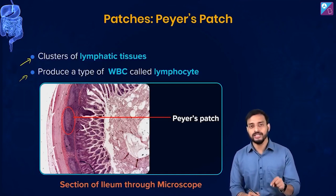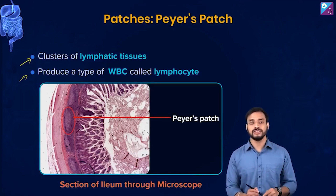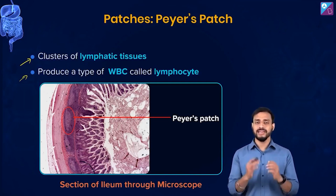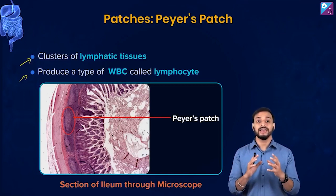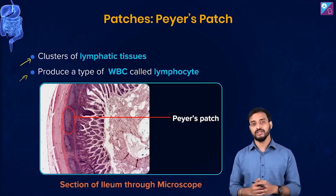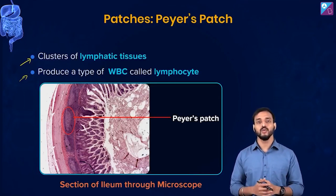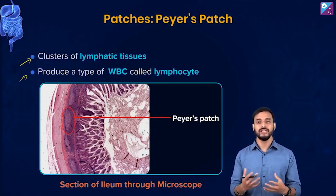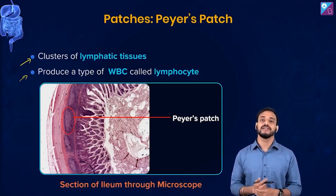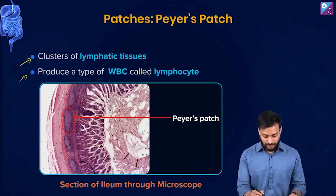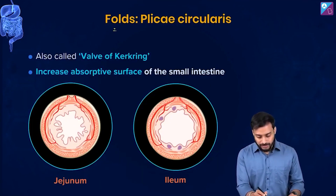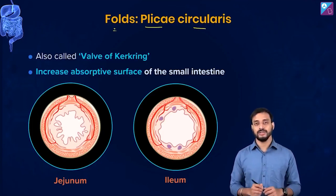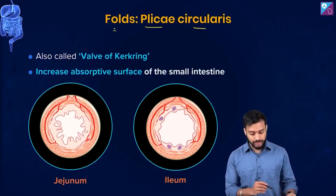Peyer's patches monitor the bacterial populations in the intestine. If by chance some pathogenic bacteria have entered, these patches will start acting and initiate the immune response. That is their function.